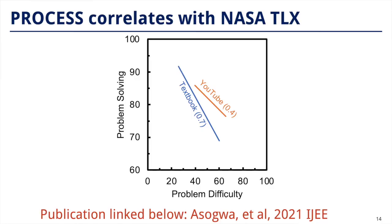Finally, we correlated problem solving with perception of problem difficulty. And when students perceive problems to be more difficult, they tend to earn lower scores in problem solving ability. The slope in parentheses can give us a measure of sensitivity of perception towards problem solving. And here, when students solve textbook problems, perception influences problem solving ability more than it does when they solve YouTube problems.